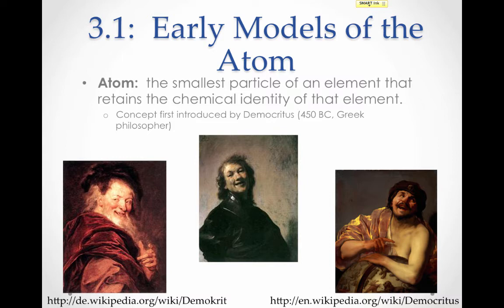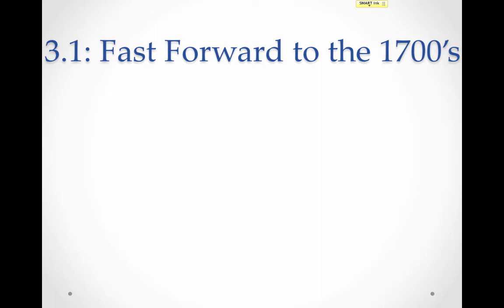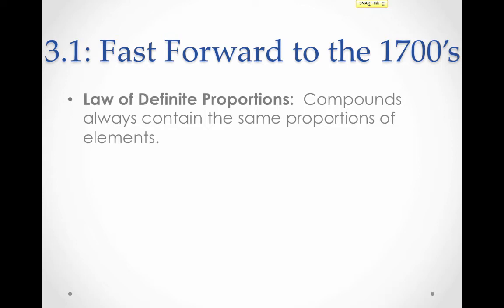Let's fast forward now all the way to the 1700s. In the 1700s, the law of definite proportions was put forward. This law has to deal with compounds. Remember, compounds are chemically combined atoms of different elements. So it was noticed that when we looked at compounds, they always contain the same proportions of the elements that make them up.